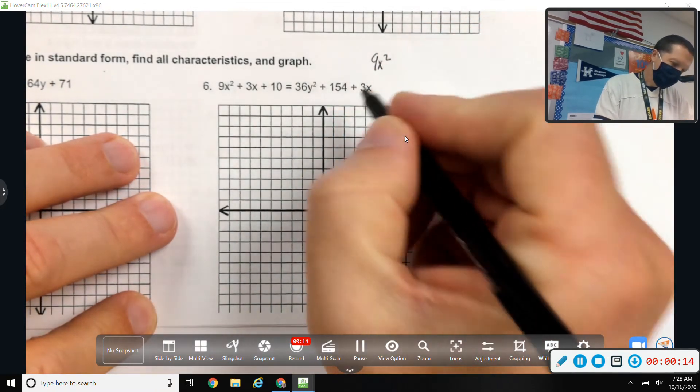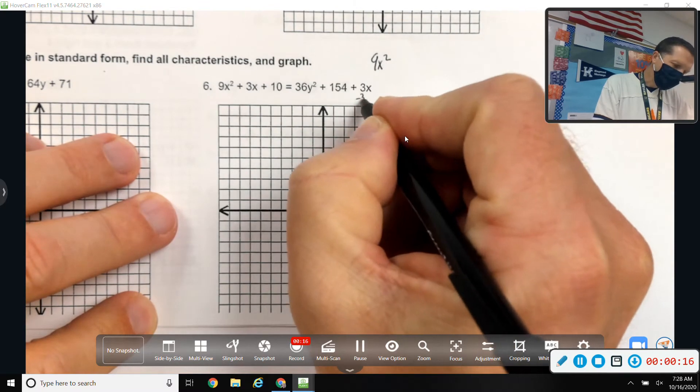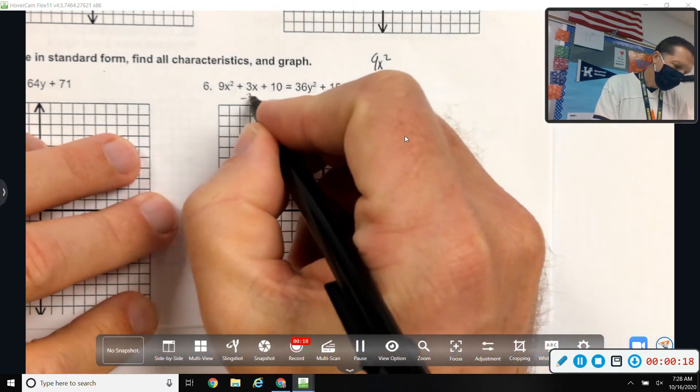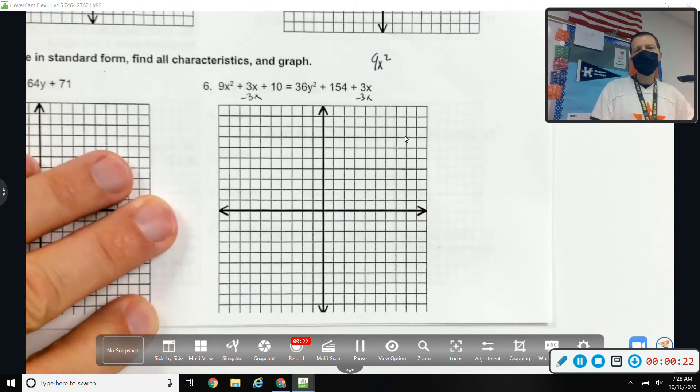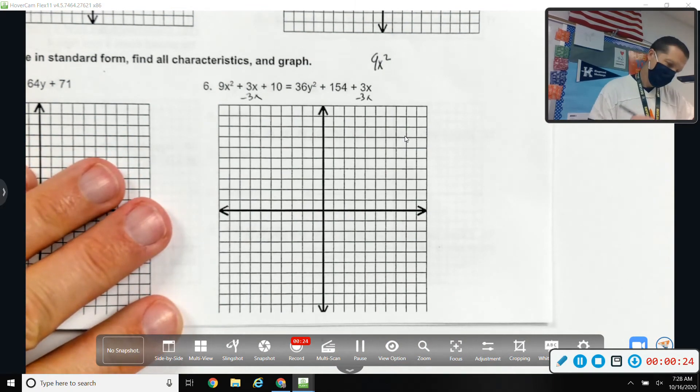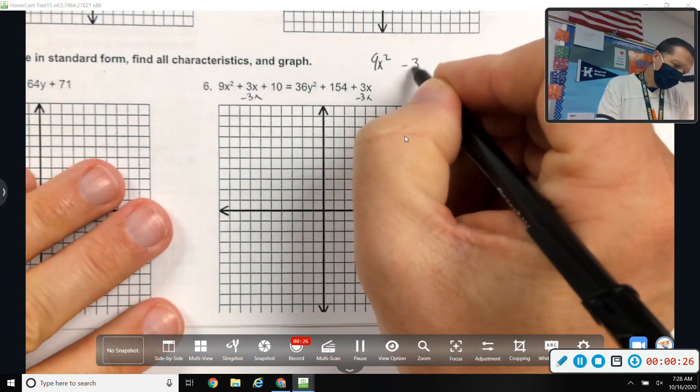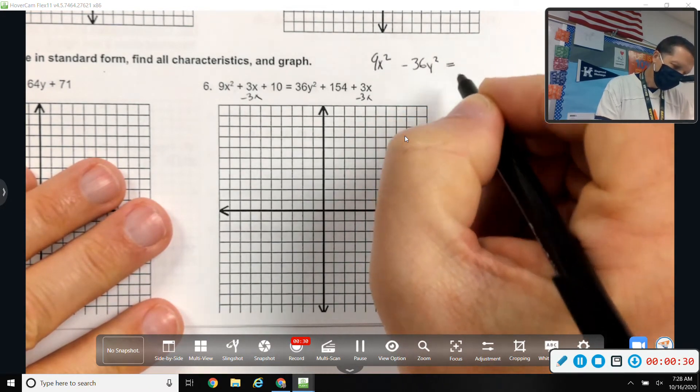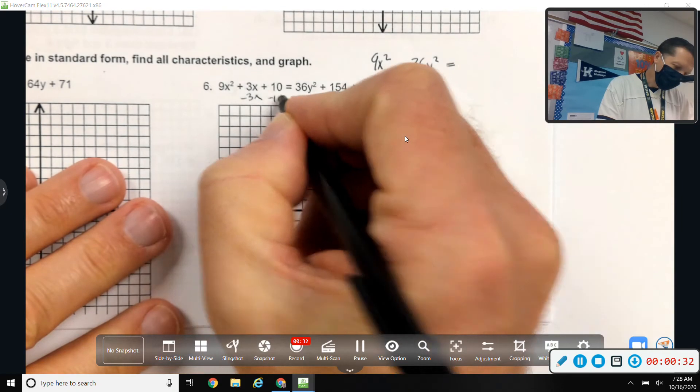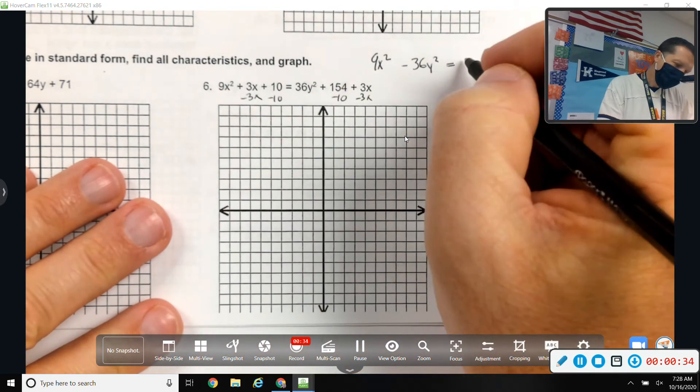9x squared. If I move the 3x over, it just goes away. So I guess that's nice. That means I won't have to complete the square on the x stuff. Minus 36y squared. Equals, I'm going to move the 10 to the other side, 144.